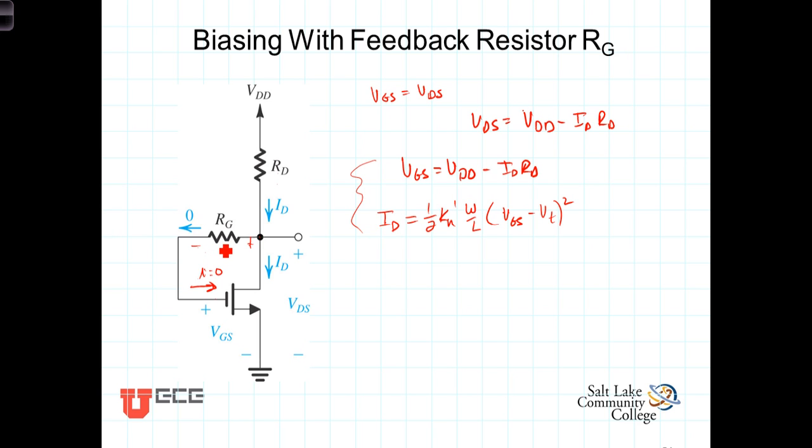Again, as I-sub-D gets bigger, VGS gets smaller. A smaller VGS here corresponds to a smaller I-sub-D, which is exactly the opposite of what we've just described. So, bigger I-sub-D leads to smaller VGS, and smaller VGS feeds back to give us a smaller I-sub-D.